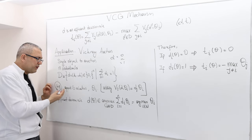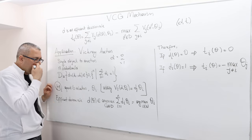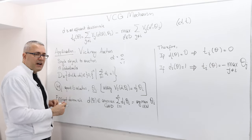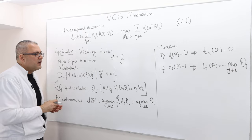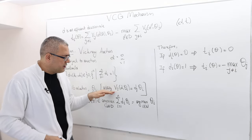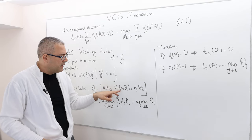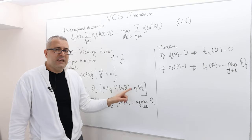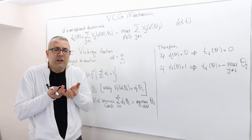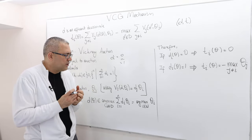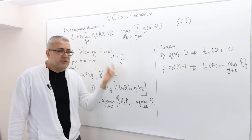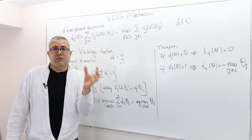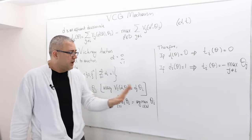What about the set of types? Agent I's valuations are their types. So capital Theta denotes the set of valuations, and small Theta_I is basically the valuation of agent I. So the utility function of agent I — represented as V_I(D, Theta_I) — is going to be D_I times Theta_I. If D_I is 0, meaning you lose the object, your utility is 0. If D_I is 1, your utility is going to be your valuation. And don't forget, there's also going to be a transfer term.